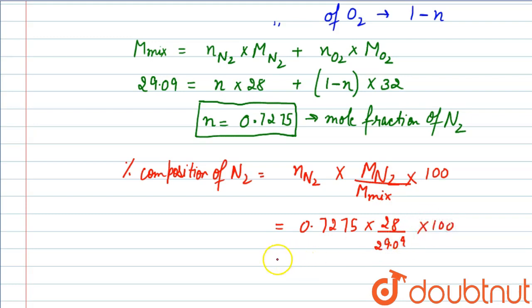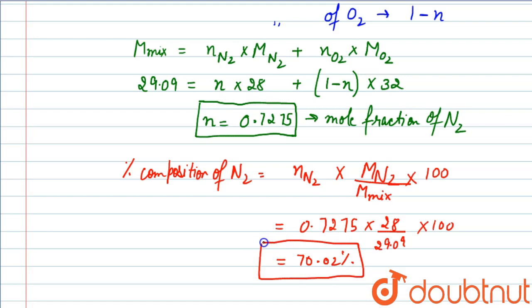This gives us 70.02 percent. So the percentage composition of N2 by mass is 70.02%. This is the answer. Thank you so much.